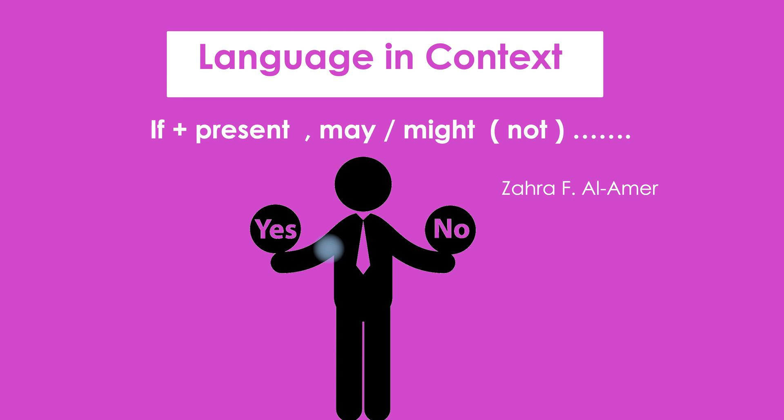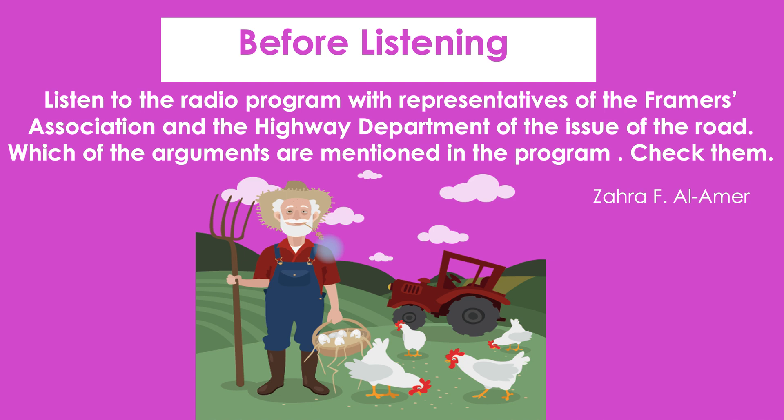We use may or might to talk about possibility — these things may possibly happen but you are not certain. Go back to the given examples and formulate sentences using this pattern to talk about causes and effects.